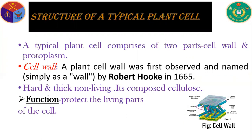A typical plant cell comprises two parts: cell wall and protoplasm. Regarding the cell wall: a plant cell wall was first observed and named simply as 'wall' by Robert Hooke in 1665. It is hard and non-living, composed of glucose. Its function is to protect the living parts of the cell.